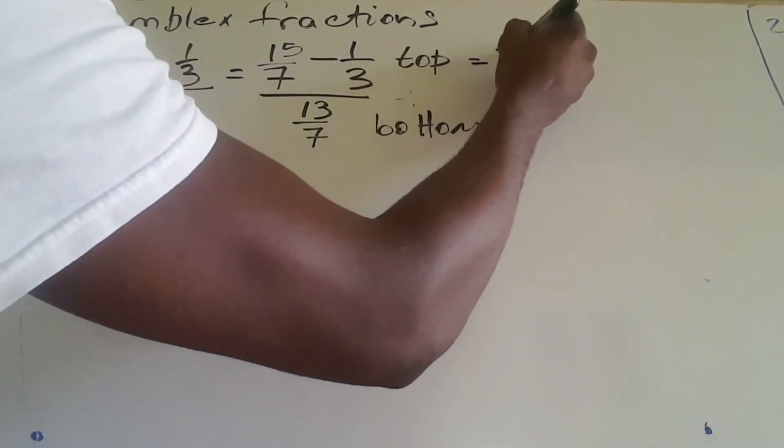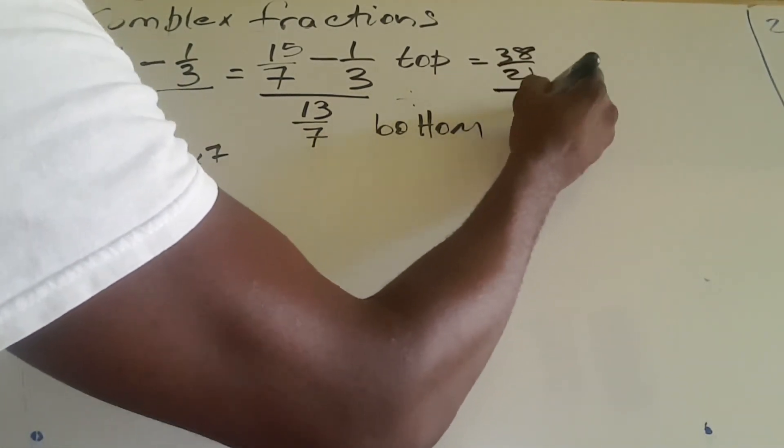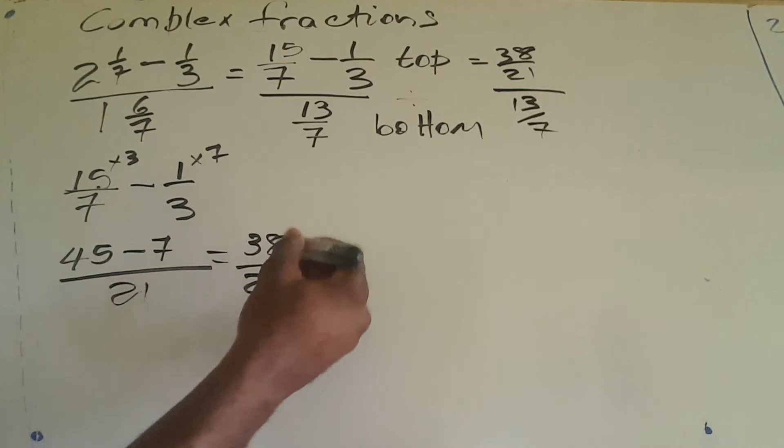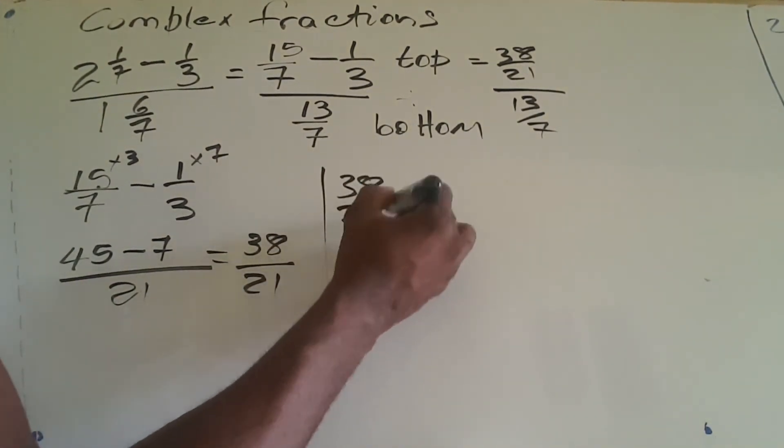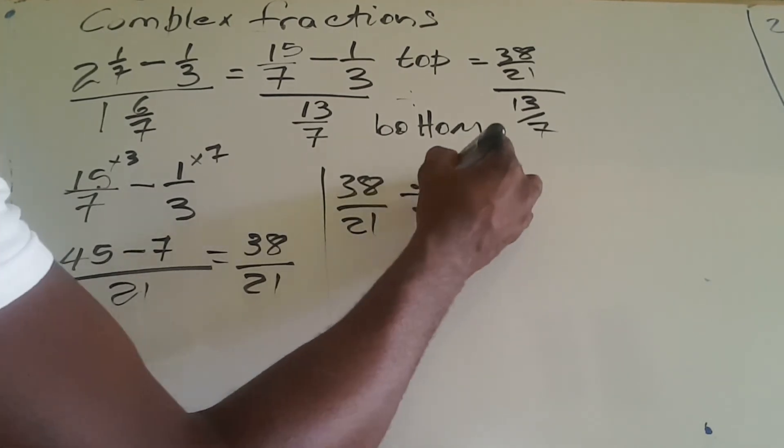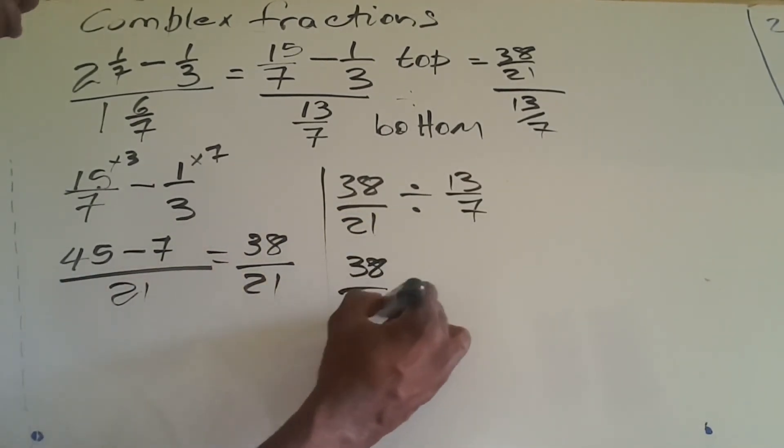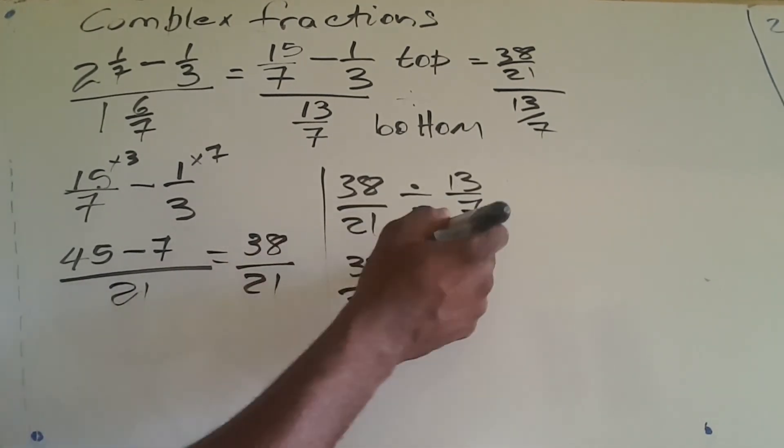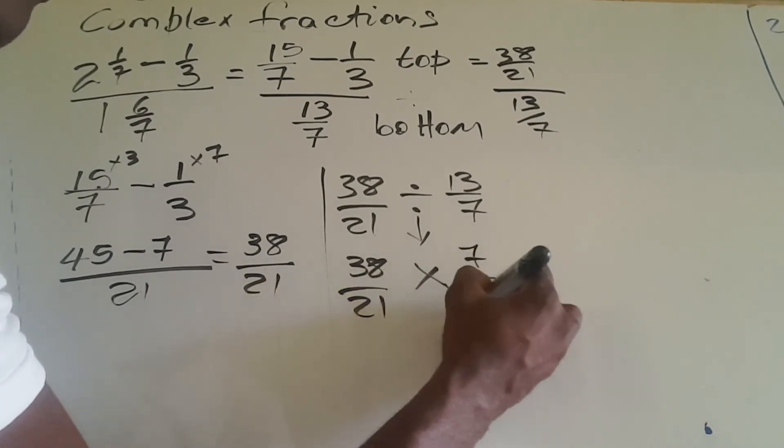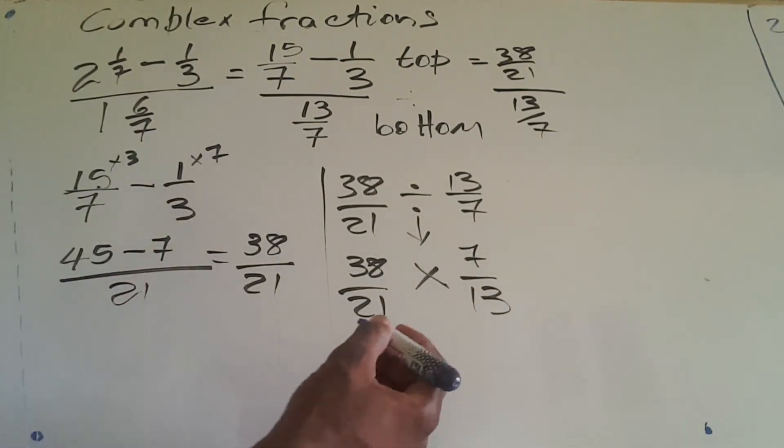So basically we have 38/21 divided by 13/7. 38/21 will now be multiplied—reciprocate this—times 7/13. Well, there is something we could cancel now.